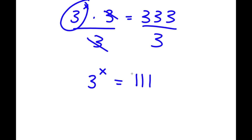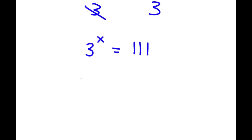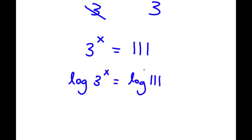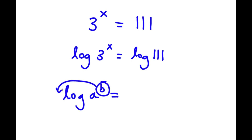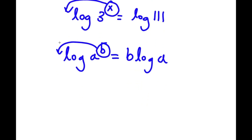So to solve this, what I'm going to do is take the log on both sides. So now I have log 3 to the power of x is equal to log 111. Now if I have something in the form log a to the power of b, I can actually move b to the front. So this equals b times log a. So for log 3 to the power of x, I can move x to the front, leading to x times log 3 is equal to log 111.